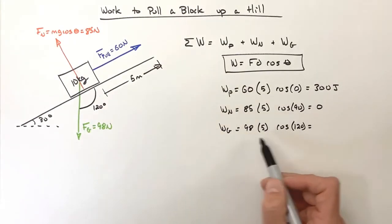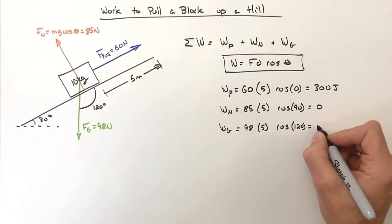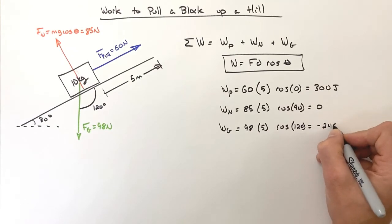So in putting all these together we find the work by gravity is negative 245 joules.